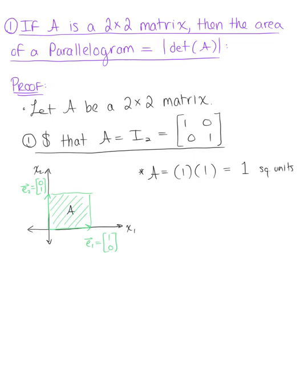We want to show that the determinant of A also gives us 1. The determinant of the identity matrix in two dimensions is 1 times 1 minus 0 times 0, which equals 1. So this case was quick and easy to check. The area of our parallelogram is 1, which equals the determinant of A.